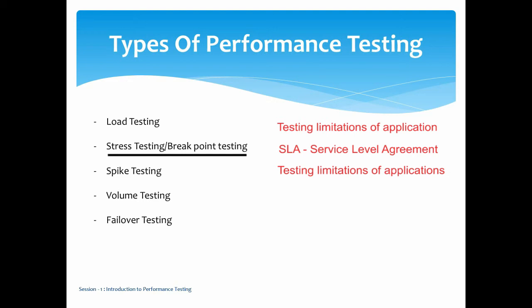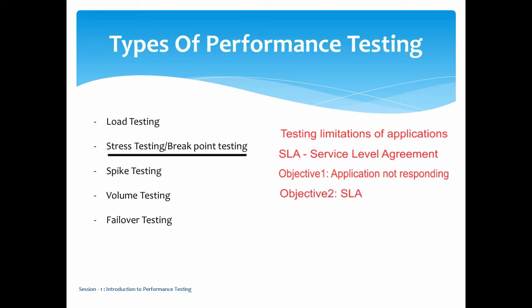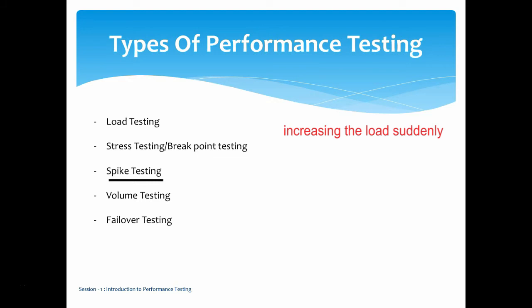So stress testing can be derived in two ways: one is based on application responsiveness, and the other is based on SLA. During special sales events, applications may load very slowly or show a 'service not available' error — these are the kinds of scenarios stress testing addresses. Formally, stress testing is testing the application with an unlimited number of users — increasing users until the application stops responding or the SLA is breached.